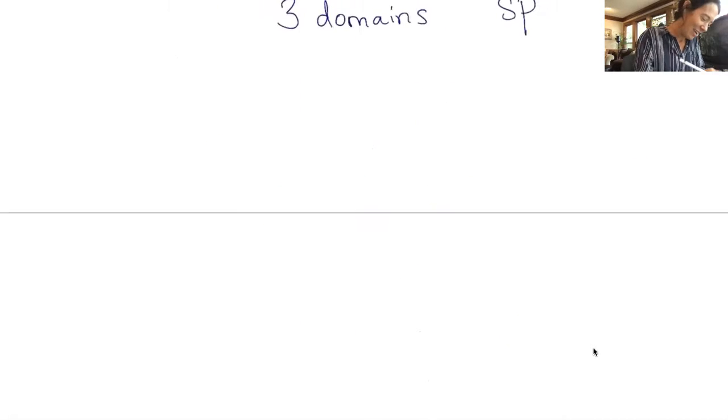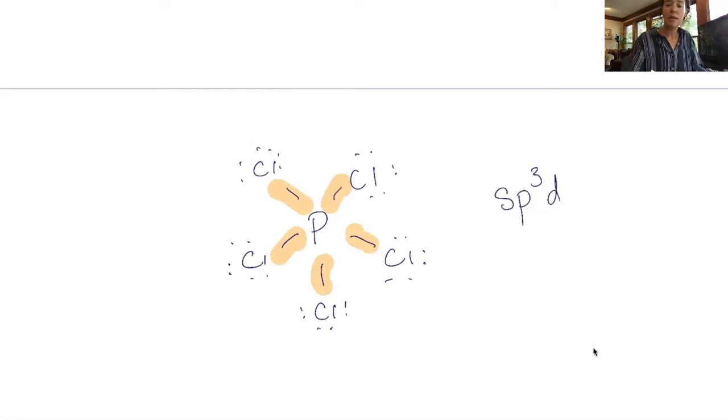There's really not much more you can do with that, right? We could look at PCL five is going to look like this. And as you can see, there are one, two, three, four, five domains. So we would need an SP three D would be our hybridization. We've got one S orbital kind of overlapping with three orbitals and a D orbital. I don't even know what that looks like y'all. That's the extent of what you need to know about hybridization.